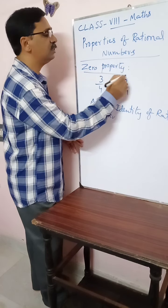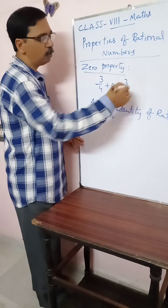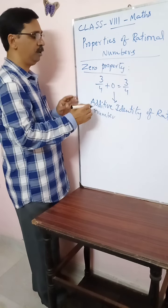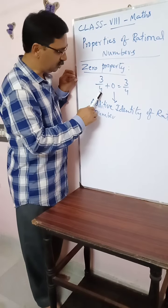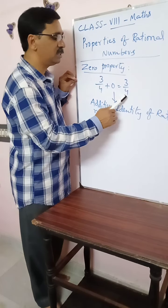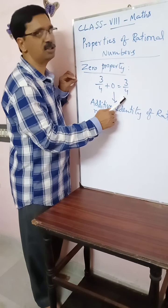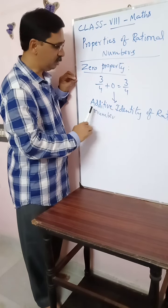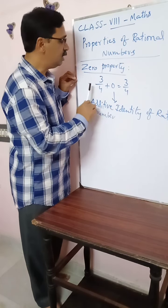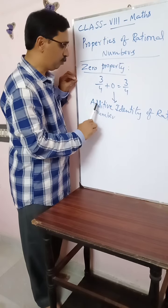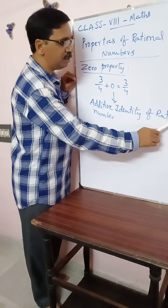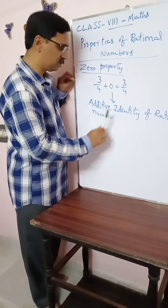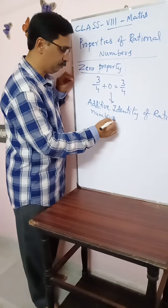So, this is called zero property or role of zero. When zero is added to any rational number, the sum is the same rational number. This is called the zero property and zero is called the additive identity of rational numbers.